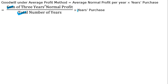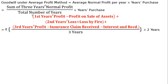So, the first year normal profit is $50,000, but it includes profit on sale of fixed assets. Profit on sale of fixed assets is an abnormal gain — since this business is not asset-based, it must be deducted (minus).